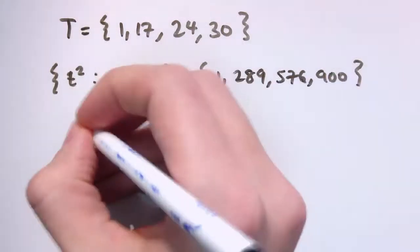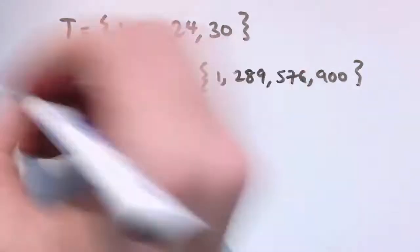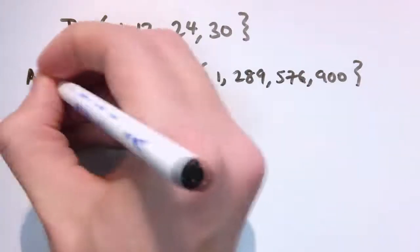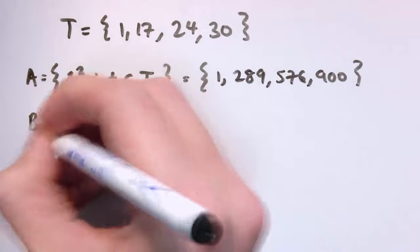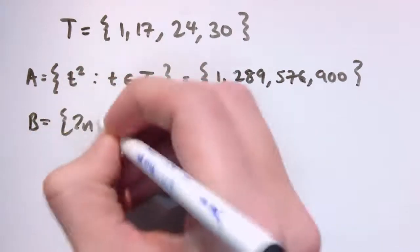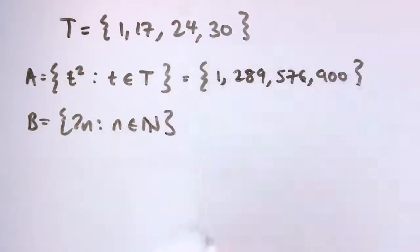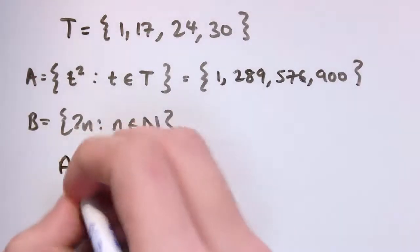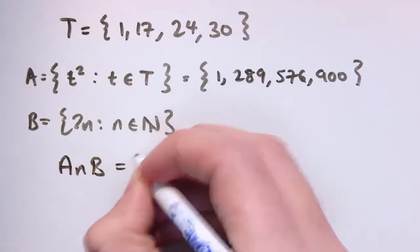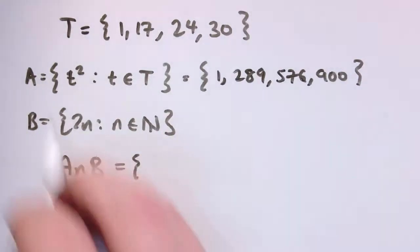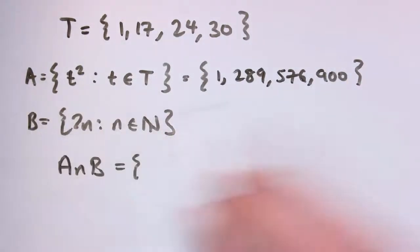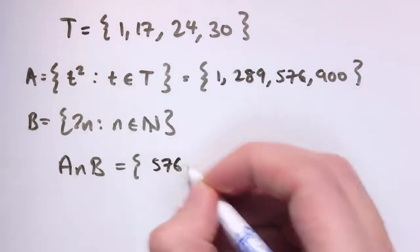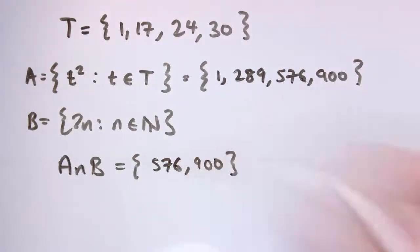Perhaps I've then also got a set, let's call this set that I've just made here A. And let's say I've also got B, which is the set 2N in N, which we've just seen a second ago, which is the even numbers. And I could start defining things like A intersect B. So A and B here will be anything that's even and also in this set. So the only ones that are even here are 576 and 900.